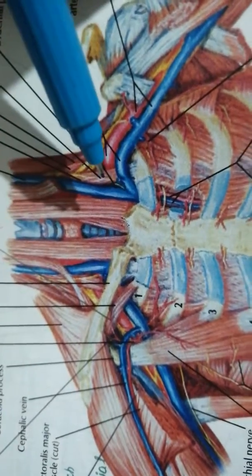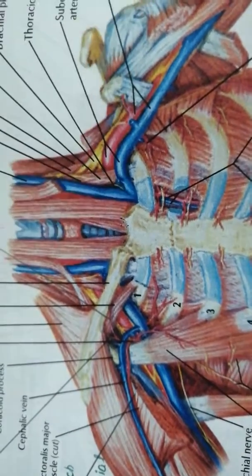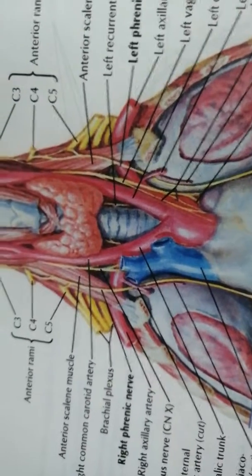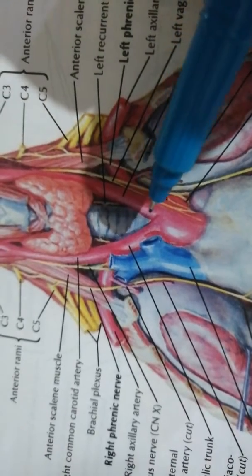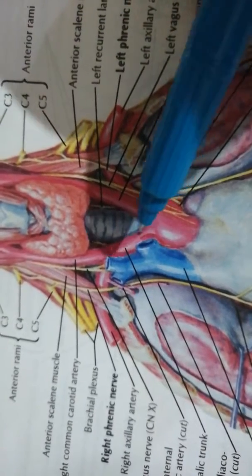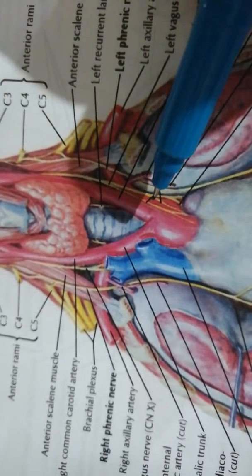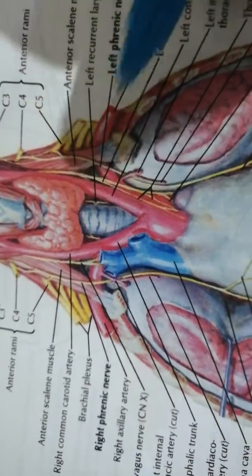Now let's talk about the vessels, which are not quite shown in this diagram. In this diagram it is quite clear that the arch of the aorta is an anterior relation, as well as the brachiocephalic trunk and part of the left common carotid artery. The right brachiocephalic trunk and the left common carotid artery are also anterior relations. Over here the left brachiocephalic vein has been cut, otherwise it would have been an anterior relation.